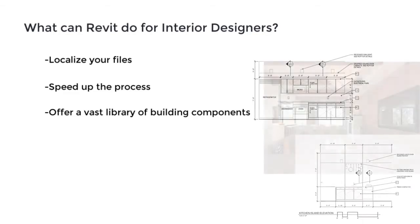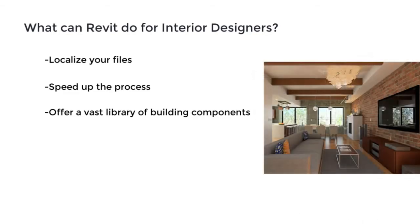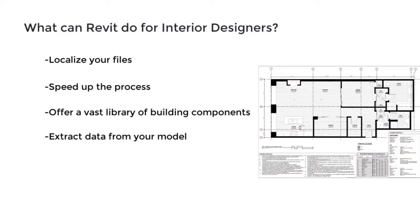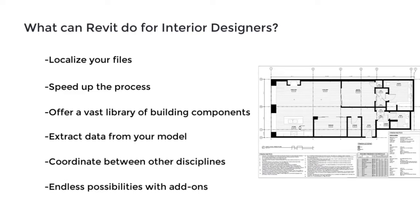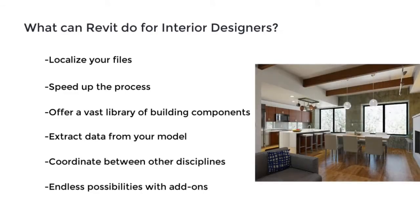Revit also offers a vast existing library of building modeling components, and we'll go over how to add to that library by creating your own components. It allows you to extract data from your model through room areas, material palettes, and cost estimates that are generated immediately. You can also coordinate between other disciplines, and there are endless possibilities with add-ons. Revit can get as complex as you want or need it to be.